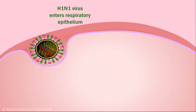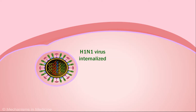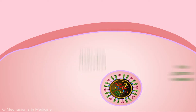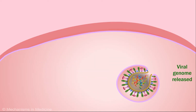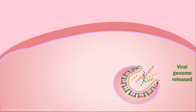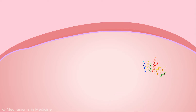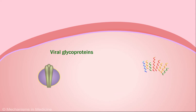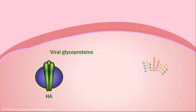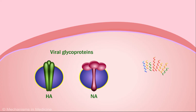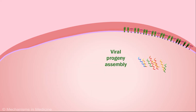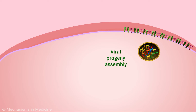Upon binding, the virus is internalized and the genome is released. The viral genome uses host cell mechanisms to transcribe and translate viral glycoproteins, including hemagglutinin (HA) and neuraminidase (NA). All of the required viral components are trafficked to the host cell's plasma membrane where viral progeny assembly occurs.